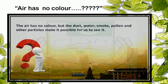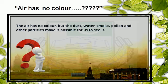On this slide, you have to prove that air has colour or not. Air is always present around us but has no colour. Sometimes we see dust particles in the air and the air appears to take their colour. So we can say air has no colour, but dust, water, smoke, pollens, and other pollutants make it possible for us to see it.